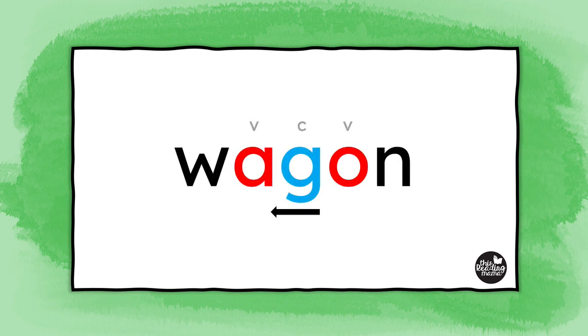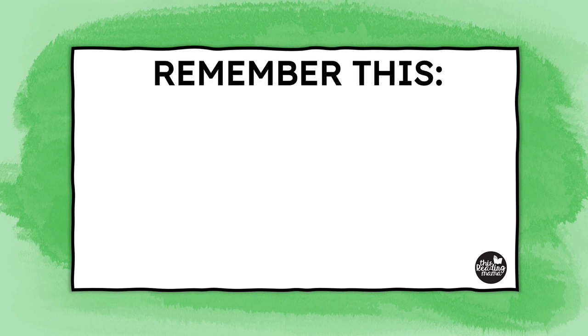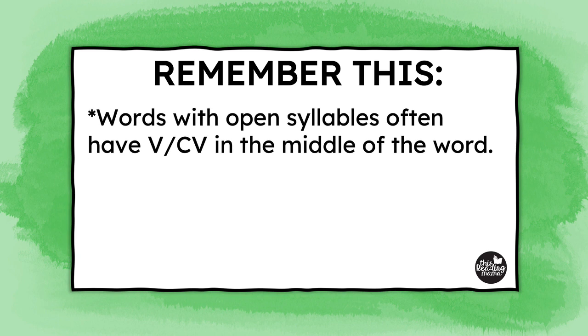Why do I keep using the word usually when I say the consonant usually goes with the second syllable? Because sometimes the consonant goes with the first syllable to close it in, like in the word wagon. That will be the topic of our next video, so stay tuned. For now, remember: words with open syllables often have a V-C-V pattern in the middle, and the consonant usually goes with the second syllable.